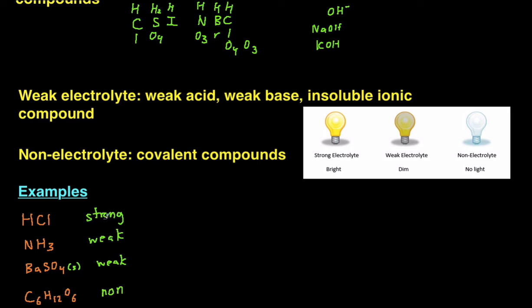So, as a result: the strong electrolyte is going to give you a bright light, your weak electrolyte is going to give you dim light, and the non-electrolyte is going to give you no light.